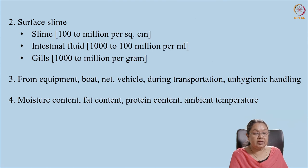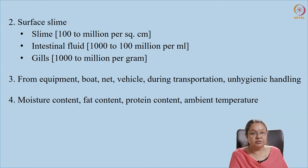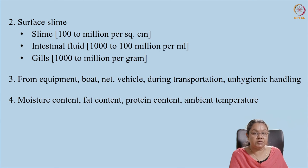The slime was reported to contain hundreds to millions of microbes — that is, one square centimeter can contain this many microorganisms. Similarly, in intestinal fluid it can range between thousands to hundreds of millions, and in gills it can also go up to thousands to millions. These are the main sites from where microbial contamination starts. Immediately after the fish is captured, we have to wash it so that the slime is removed, and also degutting — that's why we said degutting is the process that has to be done immediately so that the escape of microorganisms from these places can be prevented.